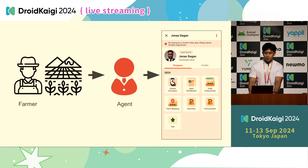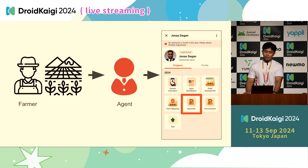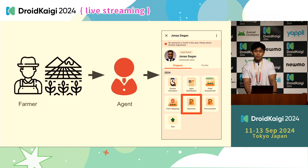There is no relation between each agent, so we don't need to sync data between agents. Our use case, for example, is recovery — recording a harvested crop. When it's time to harvest, the agent records data like what kind of crop it is and the number of bags. That is how our app works in general.